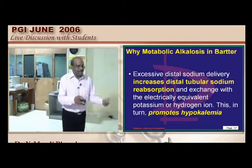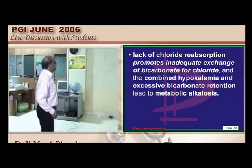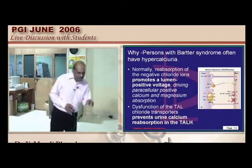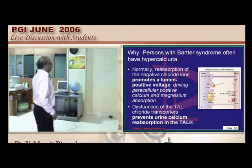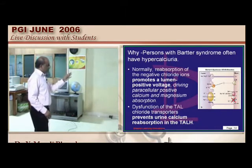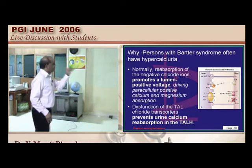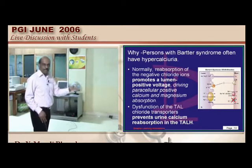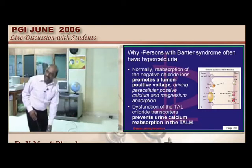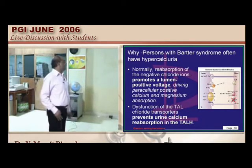Why hypercalciuria in Bartter? There is a relationship between chloride reabsorption and calcium reabsorption in the distal tubule. Normally, chloride reabsorption from the tubular lumen into the cell creates a lumen-positive voltage, which is the driving force for calcium reabsorption. Without NaCl reabsorption, lumen positivity is not maintained, so calcium slips into the lumen and is lost — causing calciuria.